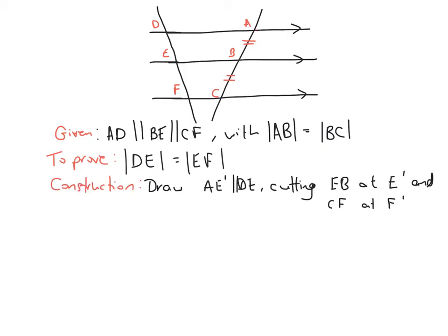For our construction, we're going to draw AE', which is parallel to DE. This line cuts EB at E' and CF at F'. So we draw a parallel line to DE running from point A — that line comes down and where it cuts line EB we label E', and where it cuts CF we label F'.